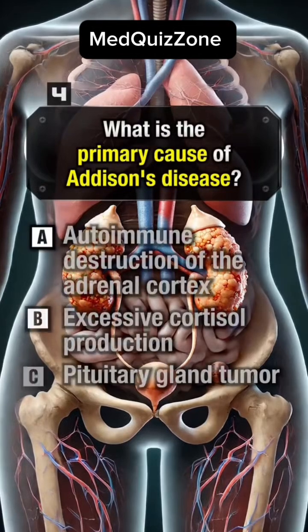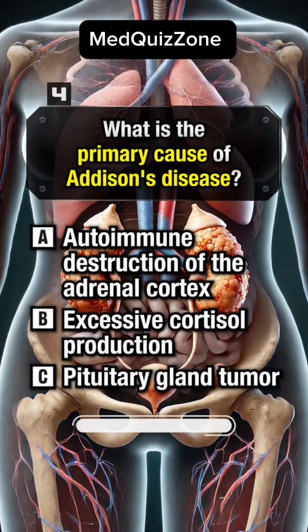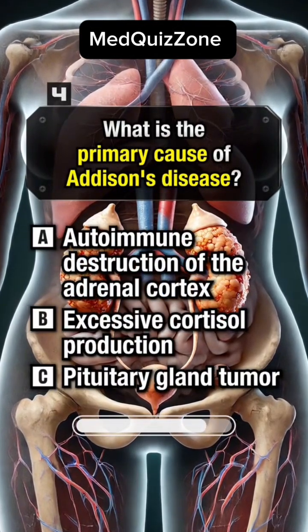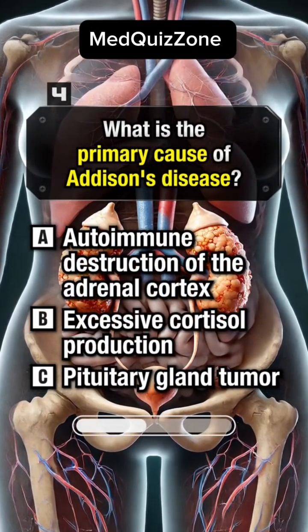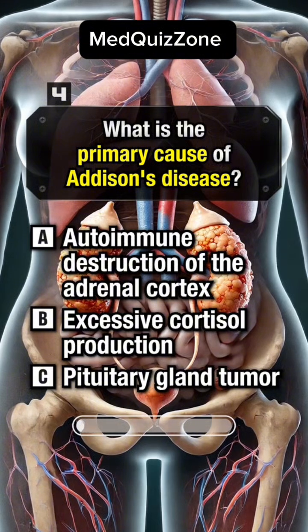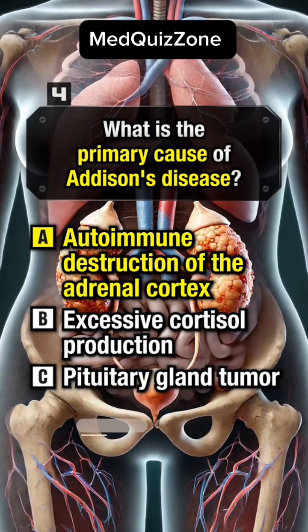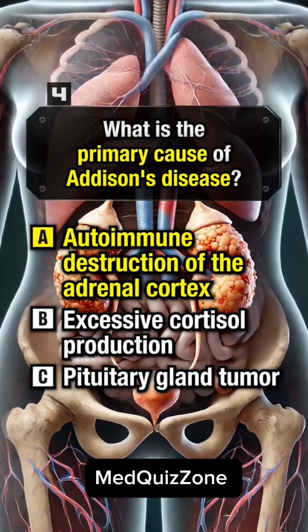What is the primary cause of Addison's disease? Answer A: Autoimmune destruction of the adrenal cortex.